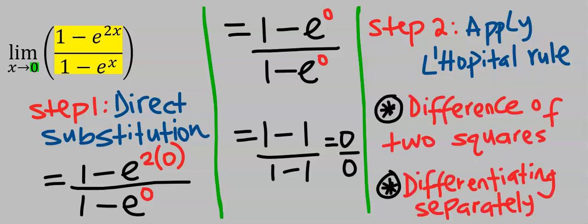Because step one direct substitution failed, we are going to apply L'Hôpital's rule. In the application of L'Hôpital's rule here, we got two options: either to use difference of two squares or to use differentiation.